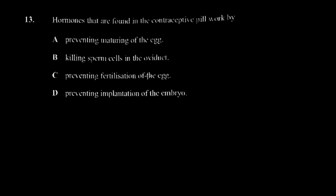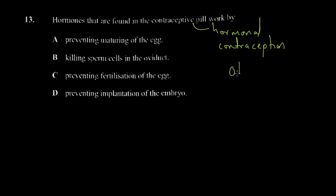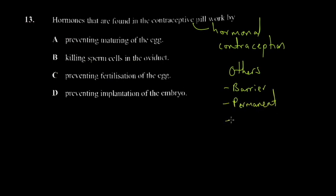Question 13 asks about hormones in contraceptive pills and how they work. The contraceptive pill is called hormonal contraception. You should know all the types of contraception. Others include barrier methods such as condoms, what are called barrier methods, and permanent birth control such as vasectomy, in addition to the hormonal contraception we're discussing.